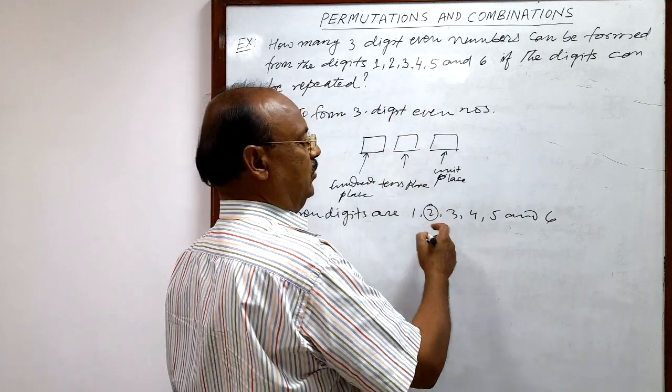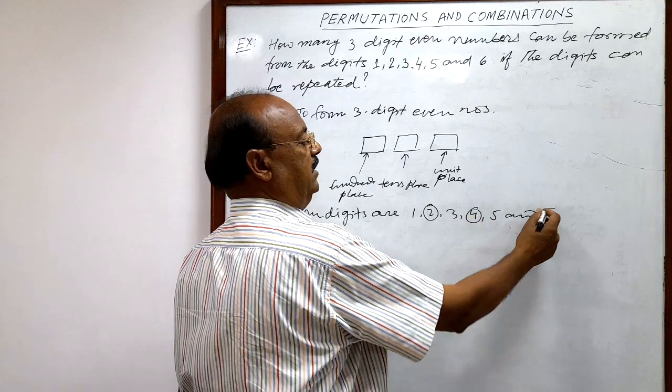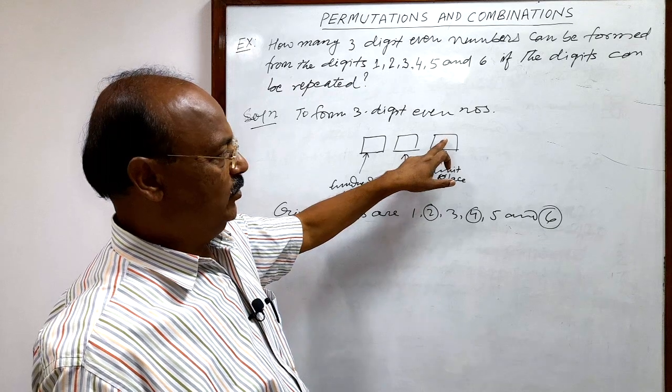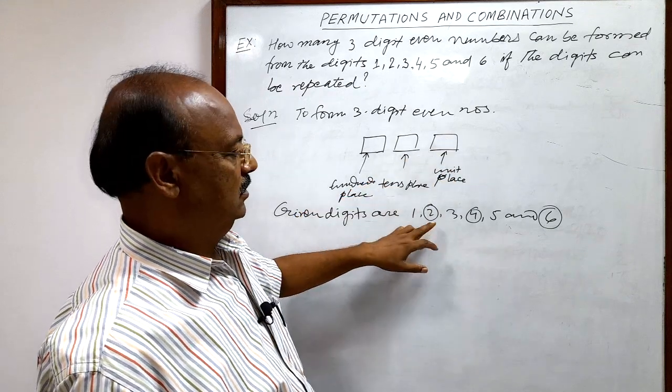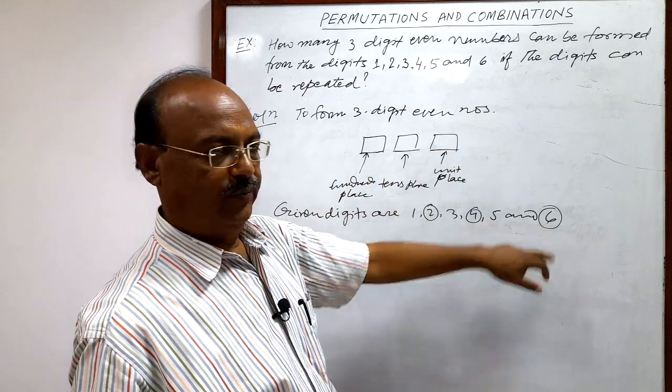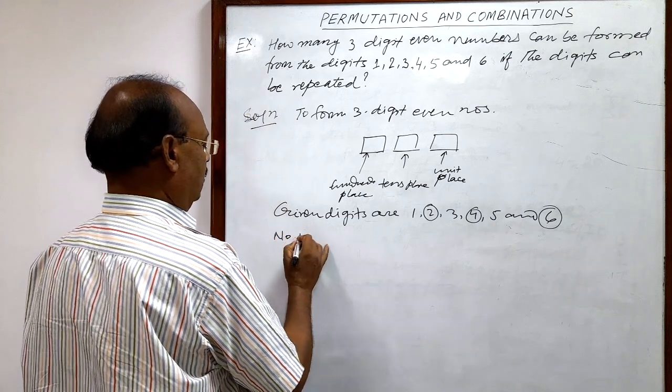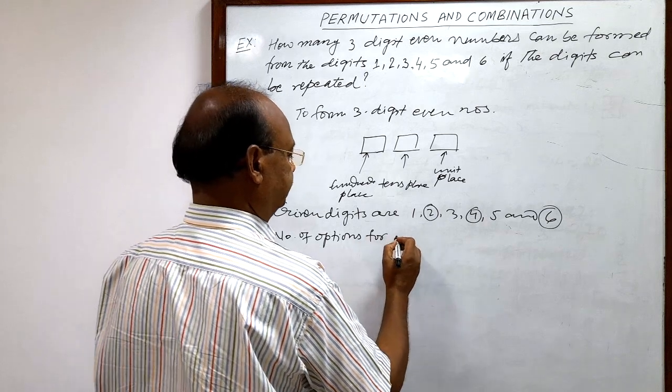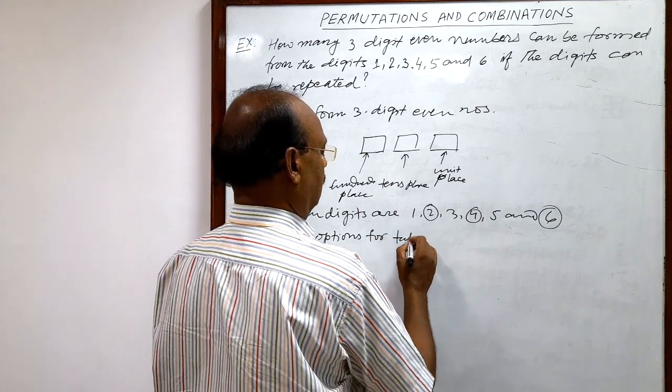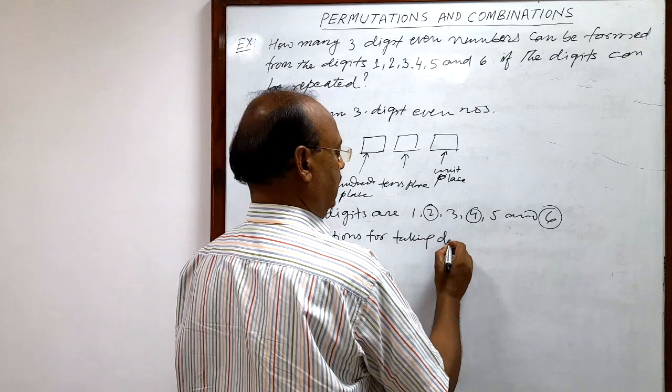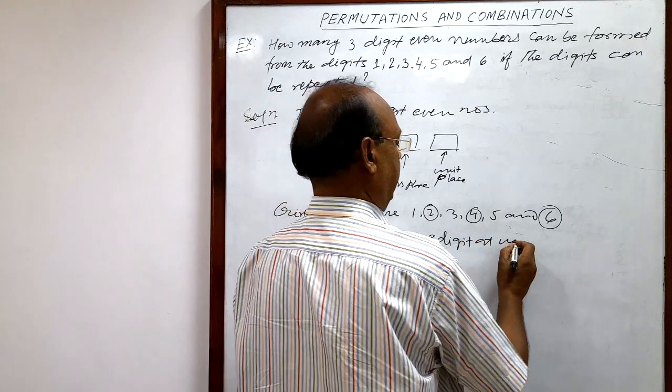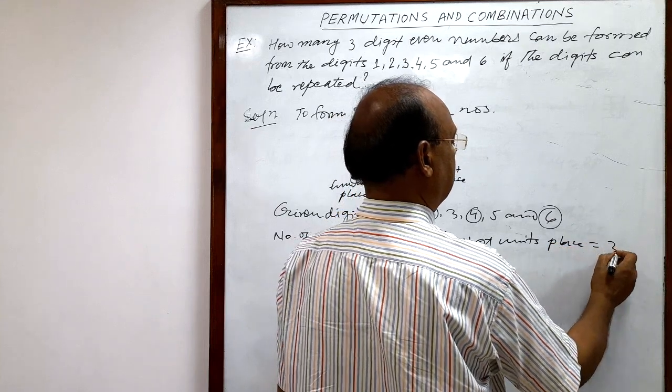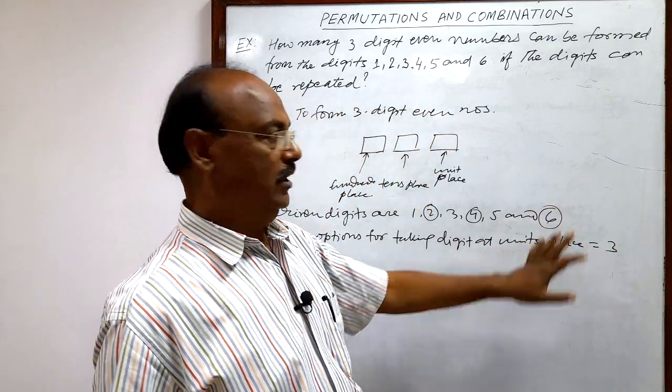We can keep here only even number because we have to form three digit even number. So we are having three even numbers 2, 4 and 6. So this digit at units place, how many options? 1, 2, 3. So this digit at units place, how many? 3 because you are having three even numbers.